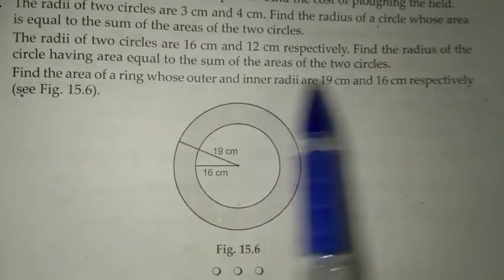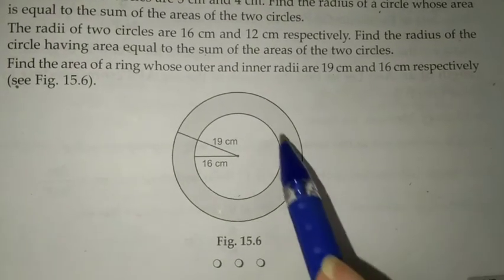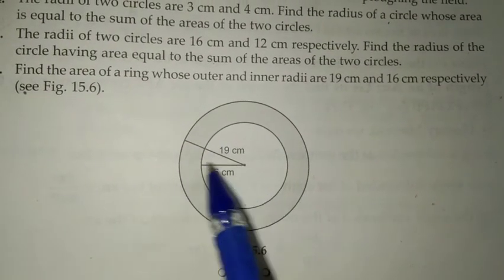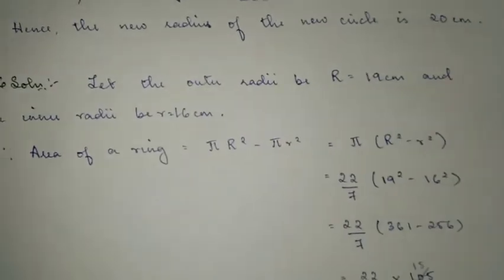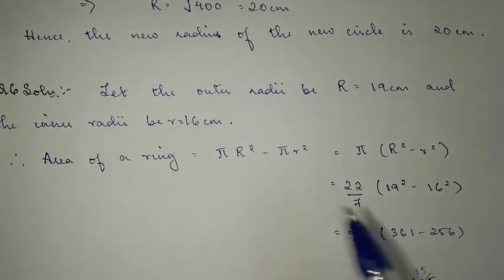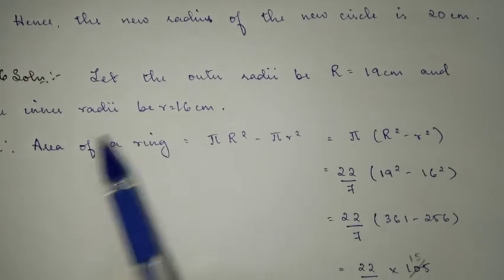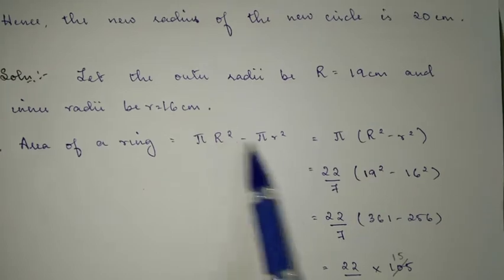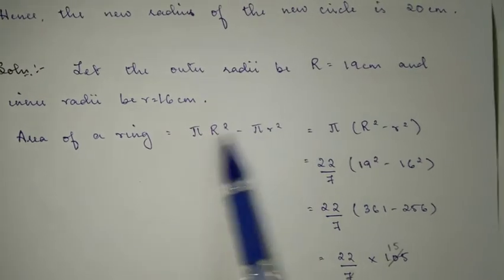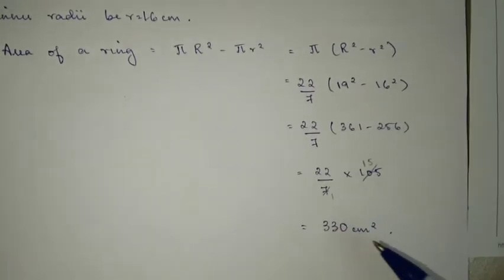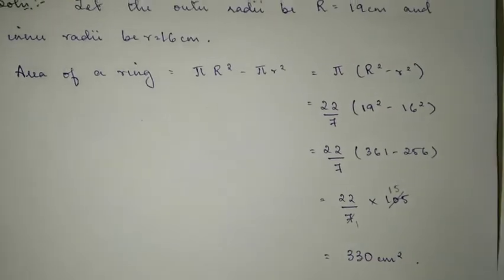Hello, in this video let's do the rest of the questions. Let's start with question number six. It says find the area of a ring. We can either directly use this formula or find it from the outer area minus the inner area. Take the common out and after solving you get 330 centimeters square.